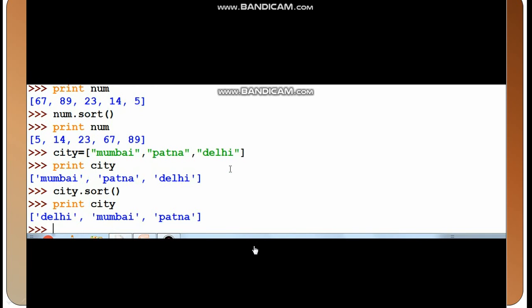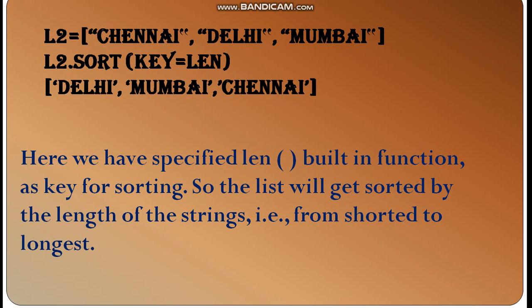Let's look at key value here. L2.sort with key equals len. It means lengthwise sorting. Lengthwise means the length that is smaller will come first.